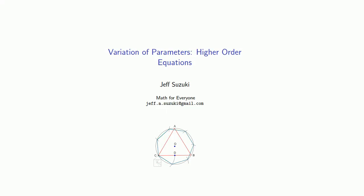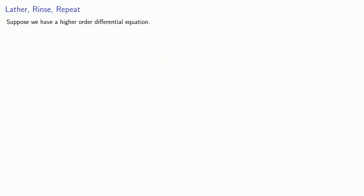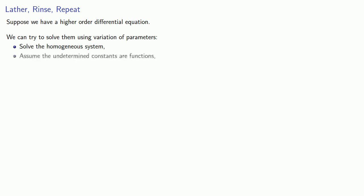We can apply variation of parameters to higher order equations. Suppose we have a higher order differential equation; we can try to solve it using a variation of parameters approach. First, we'll solve the homogeneous system. Next, we'll assume the undetermined constants are functions. This allows us to set up a system of equations to find the derivatives, and then we can anti-differentiate to find these undetermined functions.